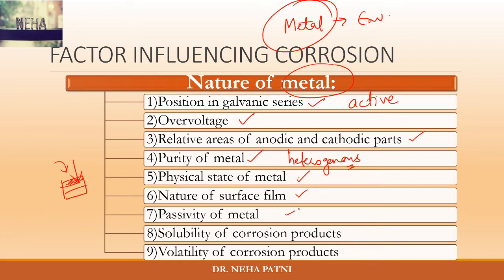Coming to passivity of metal: a metal can be reactive or passive. We have to ensure that the film which is formed is self-healing and has high corrosion resistance. The passivating nature of metal is highly expected. Then there is solubility of corrosion products: in electrochemical corrosion, if the corrosion product is soluble in the medium, then the corrosion will proceed at a faster rate. So we have to see whether the corrosion product is insoluble or soluble in the medium.